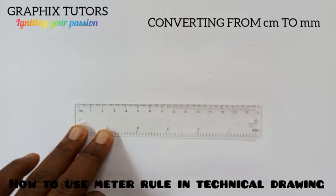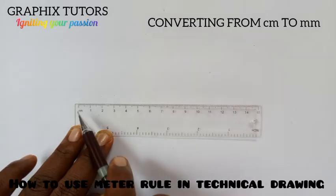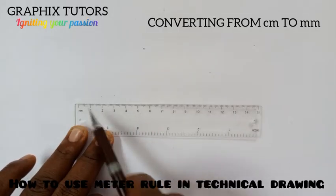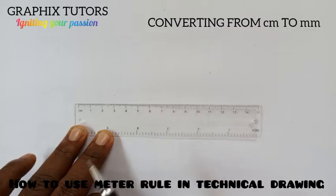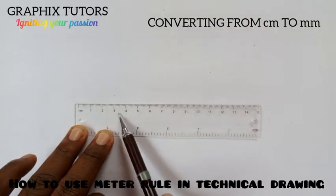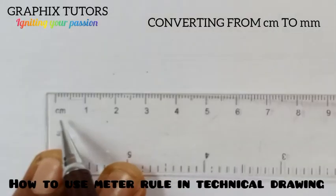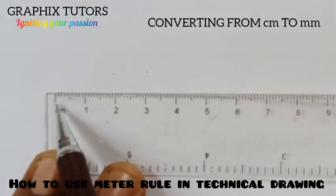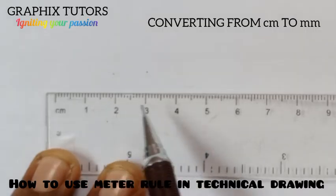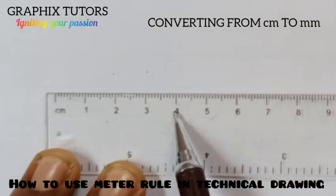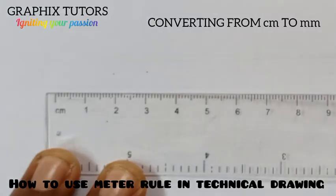Now if you look at your metal rule, you see some figures, big figures on it. All those figures are in centimeter. It's even indicated closely, the word centimeter. So it means that this is zero centimeter, one centimeter, two centimeter, three centimeter, four centimeter, and so on and so forth.